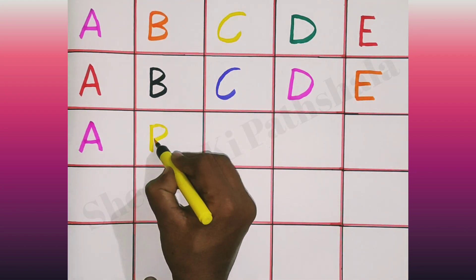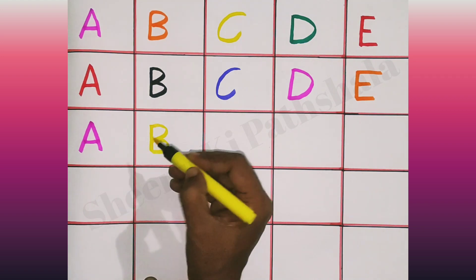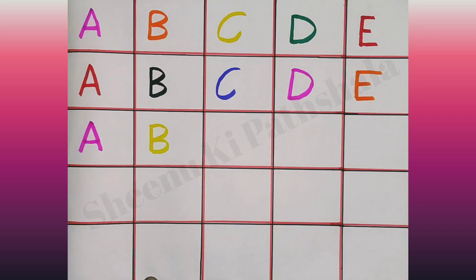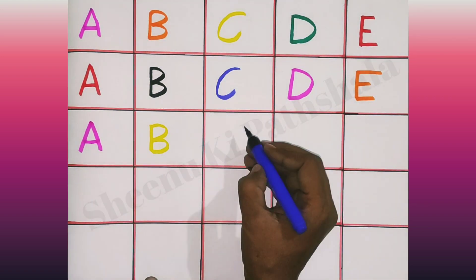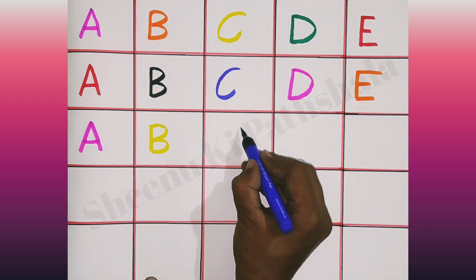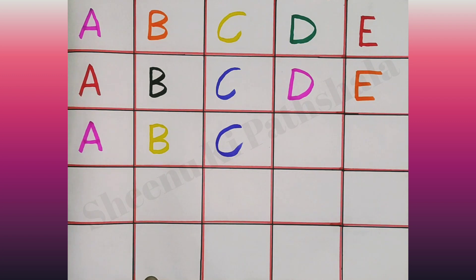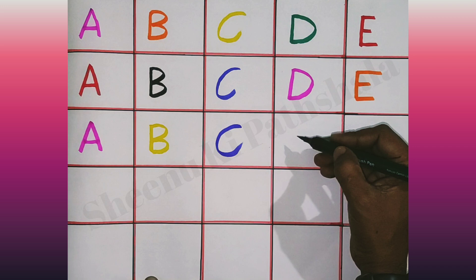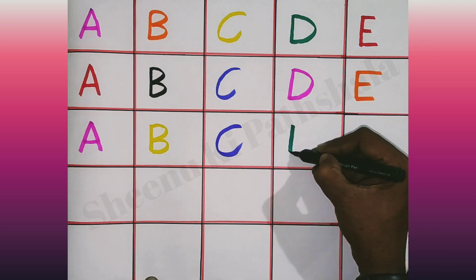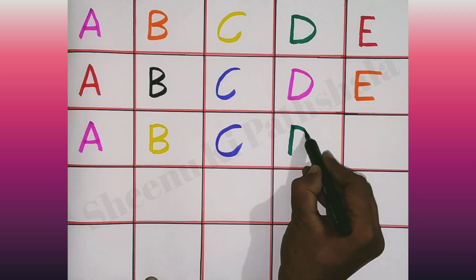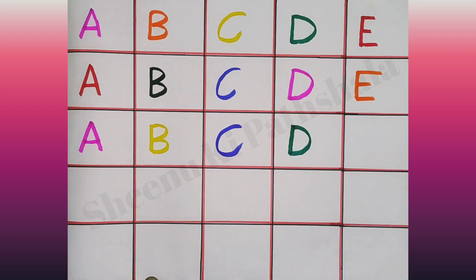B. B for ball. B for ball. C. C for cat. C for cat. D for dog.